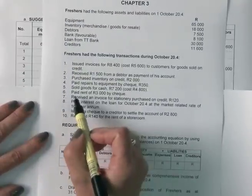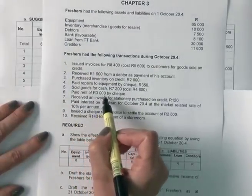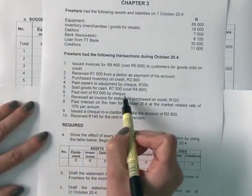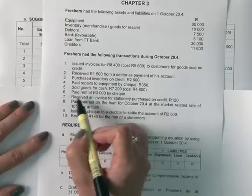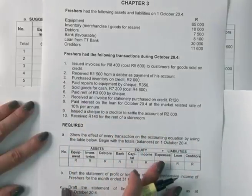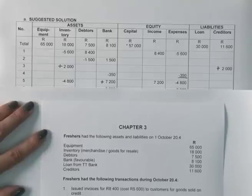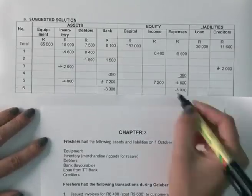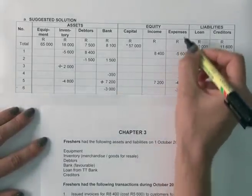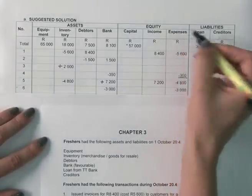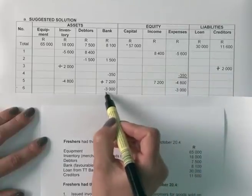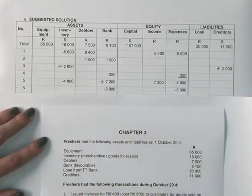Transaction six: paid rent of 3,000 Rand by check. Paying rent will decrease profits. So we go to equity and decrease profits through expenses, and there is also a decrease in bank because the rent was paid from the bank account.